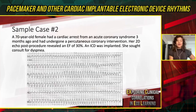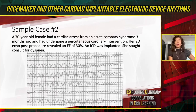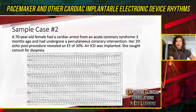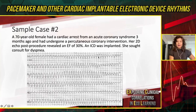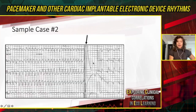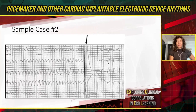The second case is a 70-year-old female with cardiac arrest from ACS three months ago who underwent PCI. Her post-op 2D echo revealed an ejection fraction of 30%. More than 90 days after PCI, an ICD was implanted and she sought consult for dyspnea. Before the ICD, the patient had ventricular tachycardia at almost 300 beats per minute. After the ICD was implanted, this ventricular arrhythmia was detected and the ICD delivered a shock, restoring sinus rhythm.